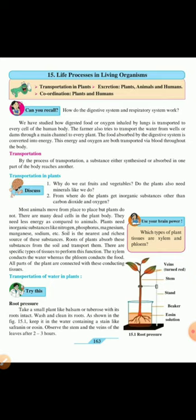Most animals move from place to place but plants do not. There are many dead cells in the plant body. They need less energy as compared to animals. Plants need inorganic substances like nitrogen, phosphorus, magnesium, manganese, sodium, etc. You can underline these in your textbook. Soil is the nearest and richest source of these substances. Roots of plants absorb these substances from the soil and transport them. There are specific types of tissues to perform this function. The xylem conducts the water whereas the phloem conducts the food. All parts of the plant are connected with these conducting tissues.